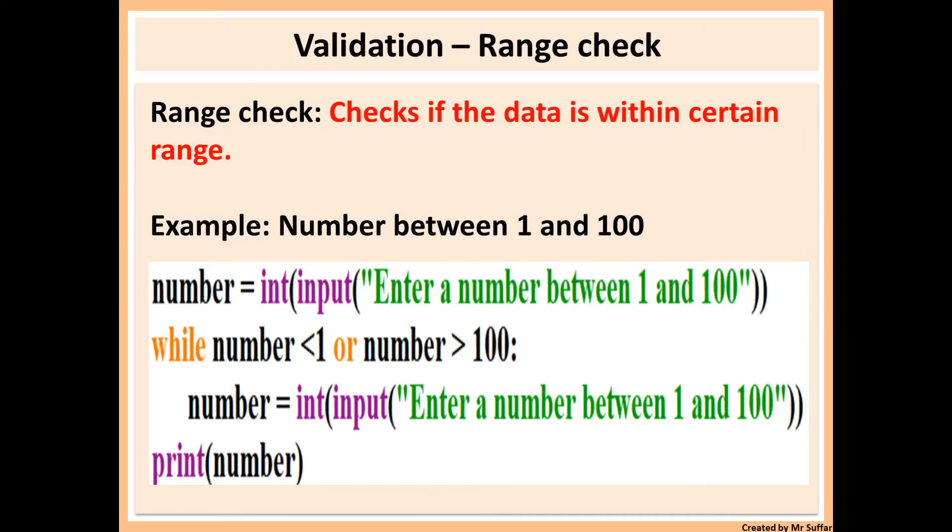Firstly, we've got range check. Range check will check that the data is within a certain range. For example, in this example, we're checking if the data is between 1 and 100. If it is, then we display the number. If it's not, then we repeat the question over and over again. This will ask for a number, then it will check while the number is less than 1 or greater than 100. If that's the case, then it will ask for the number again.